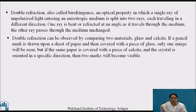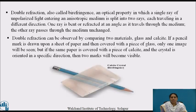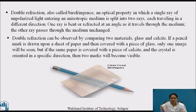Double refraction is also called birefringence — an optical property in which a single ray of unpolarized light entering an anisotropic medium splits into two rays, each traveling in a different direction. One ray is bent or refracted at an angle as it travels through the medium, while the other ray passes through unchanged. Double refraction can be observed by comparing two materials: glass and calcite.